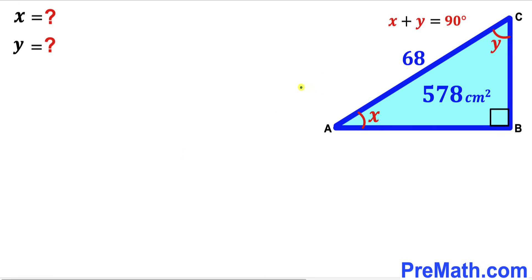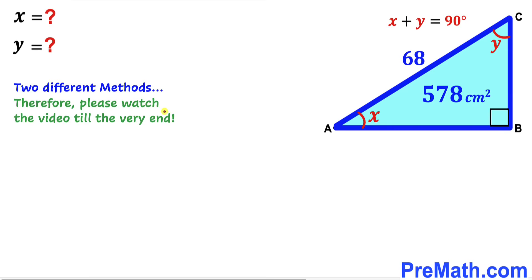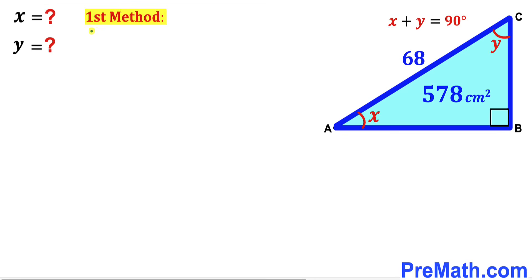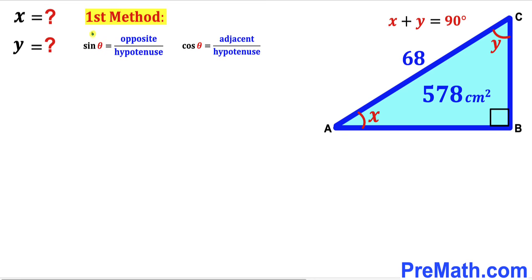Let's get started. In this video I'm going to share two different approaches, so please watch until the very end. Here is our first method. Let's recall these two trigonometric ratios: sine of theta equals opposite divided by hypotenuse, and cosine of theta equals adjacent divided by hypotenuse.